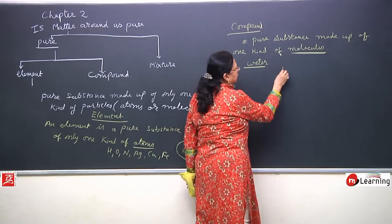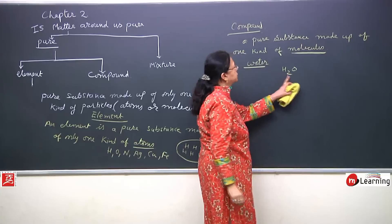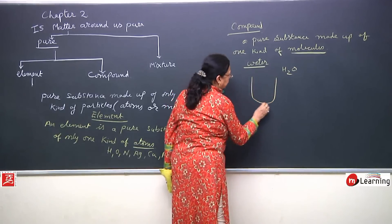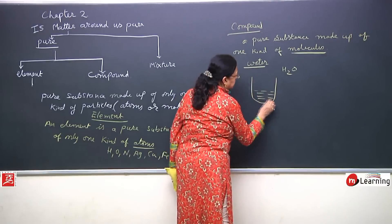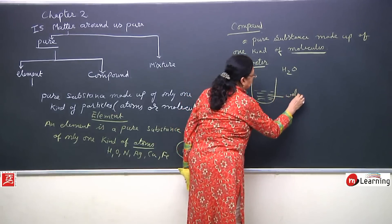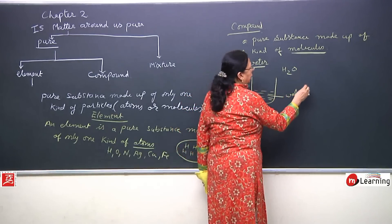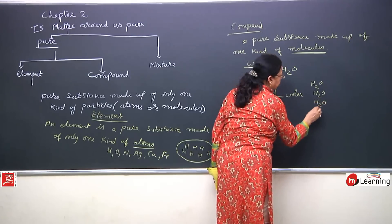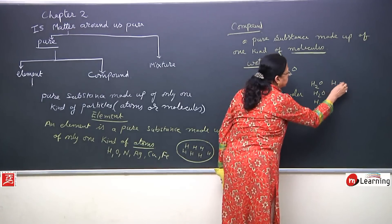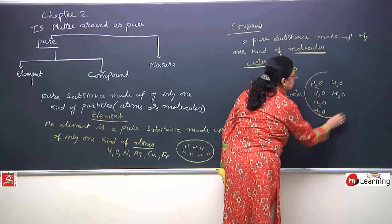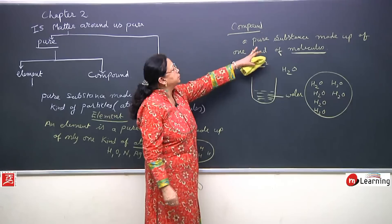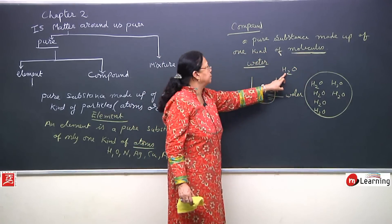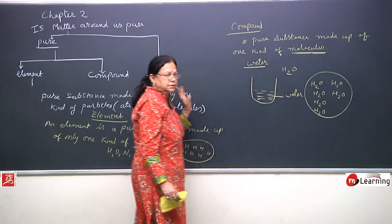Take the example of water. What is water? H2O — the chemical formula of water is H2O. If I have some quantity of water in a container, all the molecules present are H2O. This means it is pure — it has only one kind of molecules. So water is a compound and it is a pure substance.